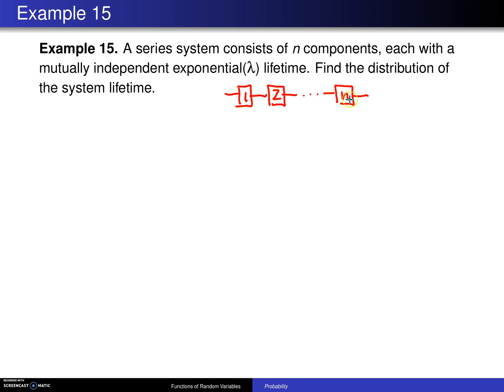Here is the block diagram of a generic n-component system where the components are arranged in series. Each one of these components has an exponential lambda lifetime, and those exponential lifetimes are mutually independent. We want the system lifetime. In other words, because this is a series system, we want the distribution of the time that the first component fails.